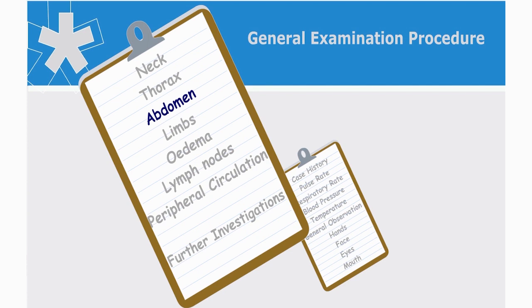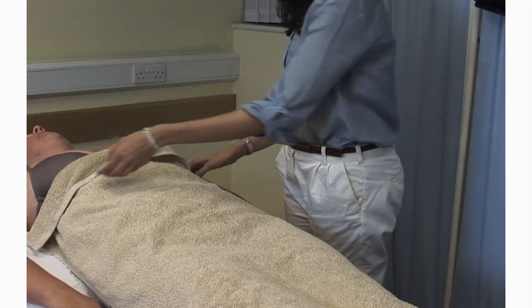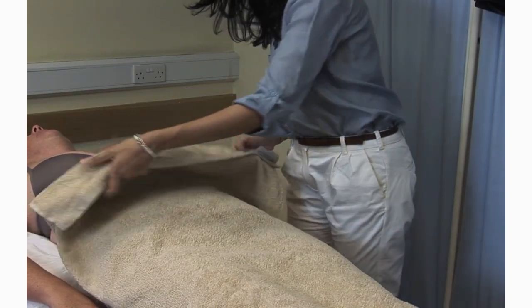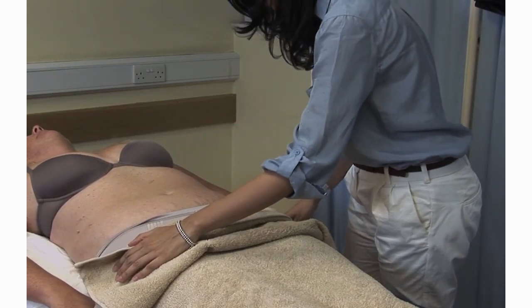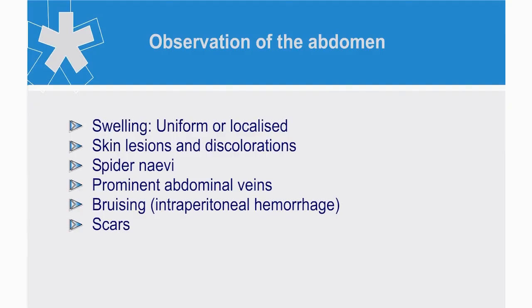We continue with inspection of the abdomen. We briefly observe for gross features before close inspection. When examining the abdomen, I start by looking at the overall shape and body morphology. Look for swelling, whether this is uniform or localised.